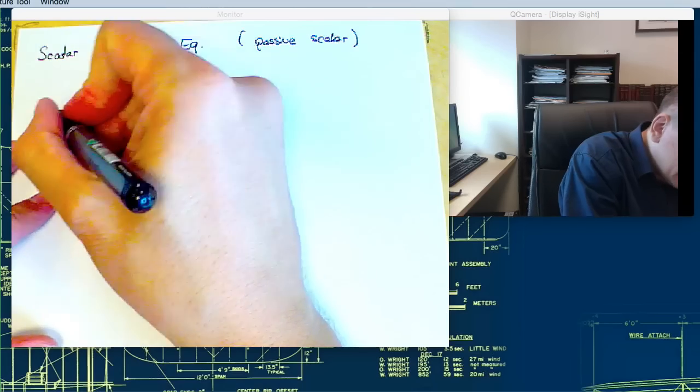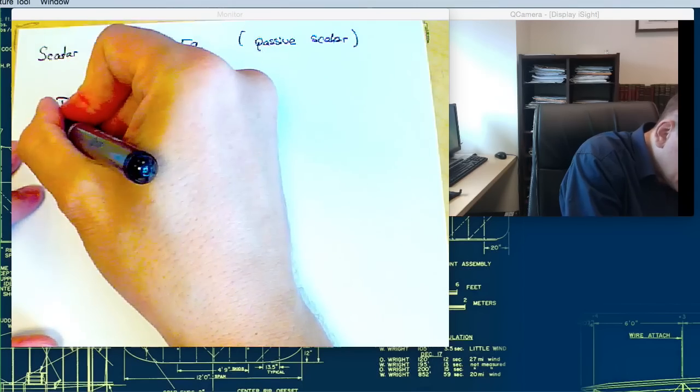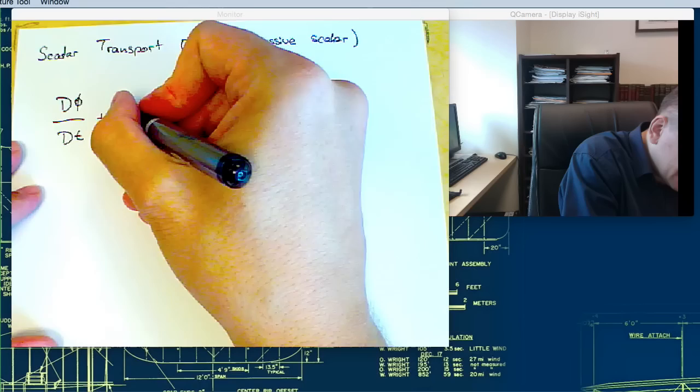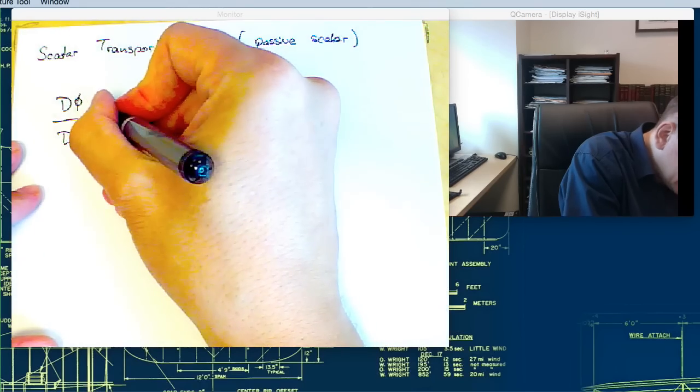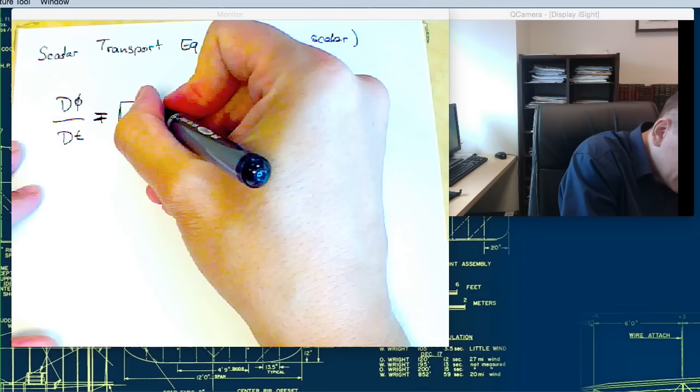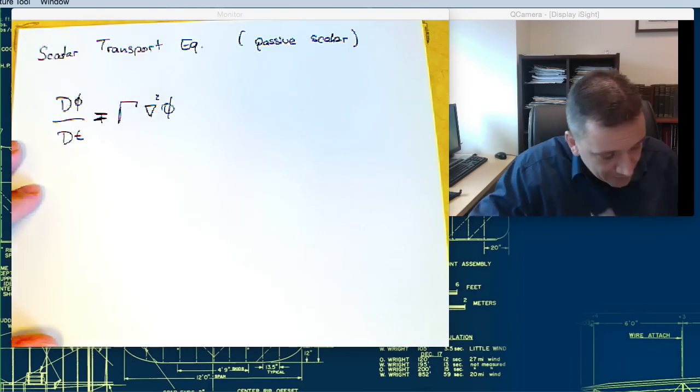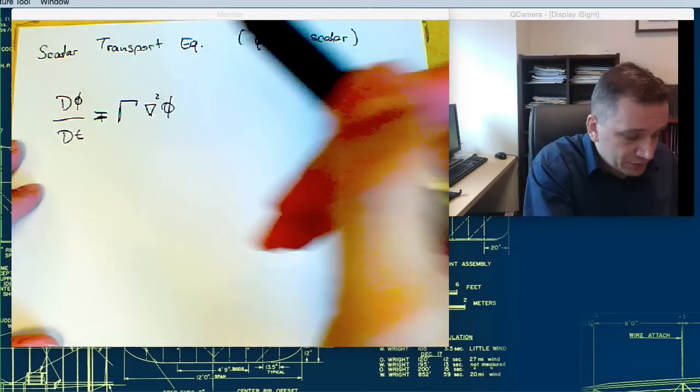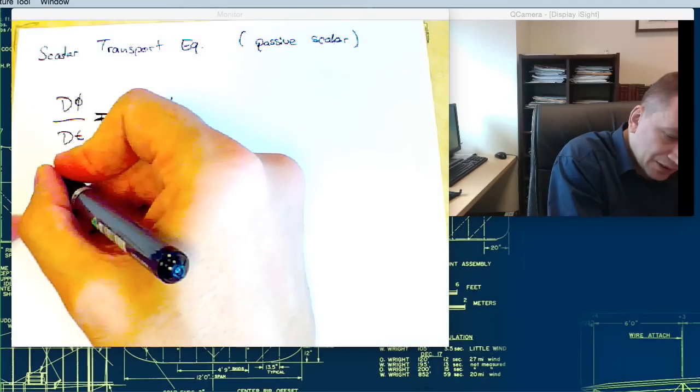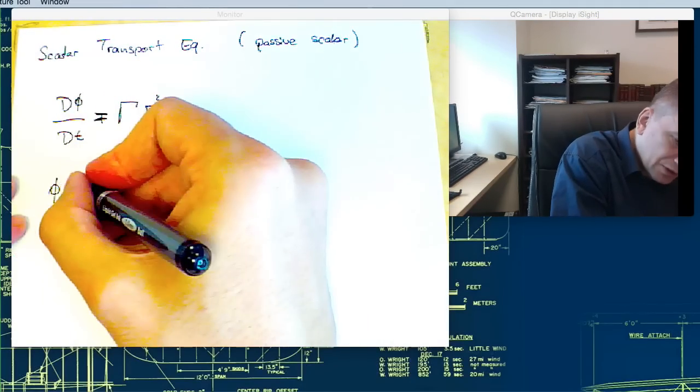The scalar transport equation is the total derivative of the scalar itself, dφ/dt, equal to the diffusivity γ times ∇²φ. That's our transport equation for the passive scalar, and the Reynolds decomposition for the scalar.